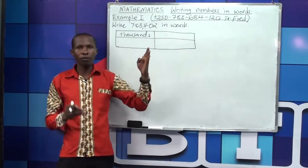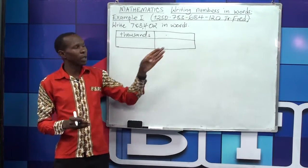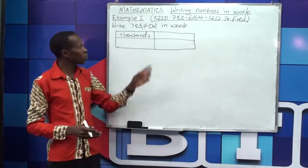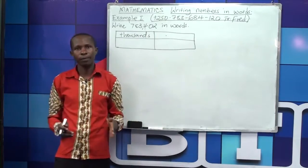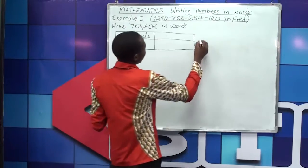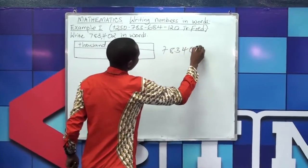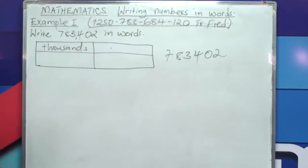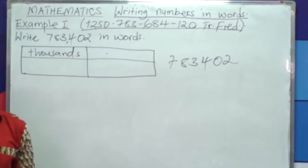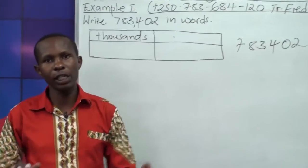We start with the column of units. In most cases we identify these units in the books where we write units, and we put a full stop there, because all what is here will be included in our answer. I'll come and identify our number: 7, 8, 3, 4, 0, 2. After identifying all these digits, we are going to group them into threes, starting from the side of ones. Count three digits and put them in one group.